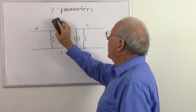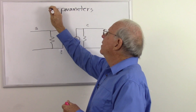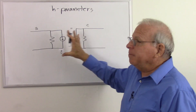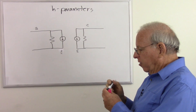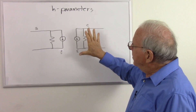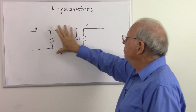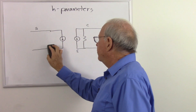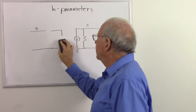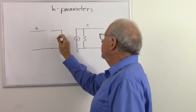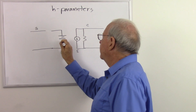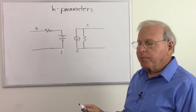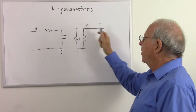Now that leads us to the hybrid parameters — H-parameters or hybrid parameters. In hybrid parameters, we mix and match our Z and Y parameters to suit the moment. Just to remind us that we're using hybrid parameters, I'm going to use a Z-parameter circuit on the input side and a Y-parameter circuit on the output side.